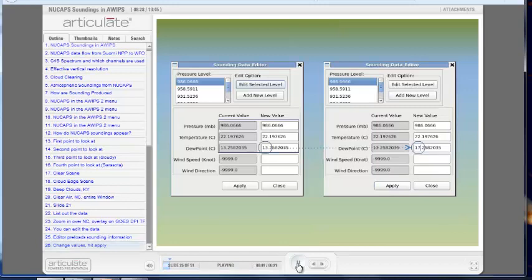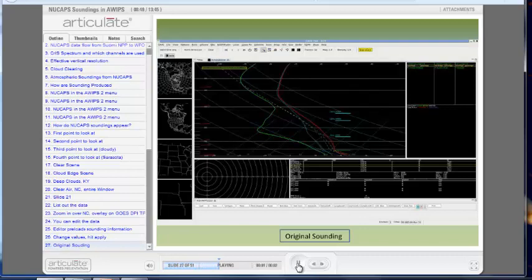Highlight the level you want to edit. Click Edit Selected Level, which will fill in the table of current and new values. Then you can change values and hit Apply. In this case, we're moistening the surface, raising the dew point from 55 to about 64, a value that is more in line with the plotted METARs.